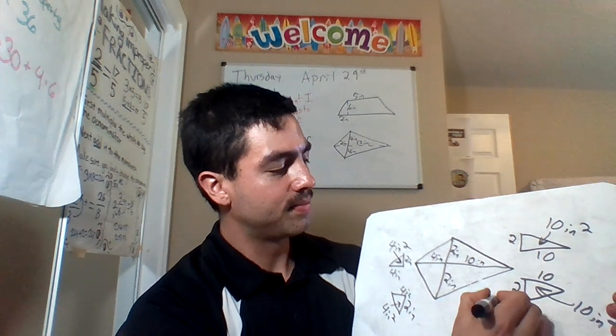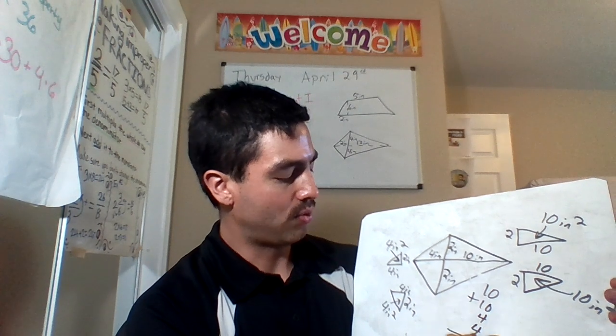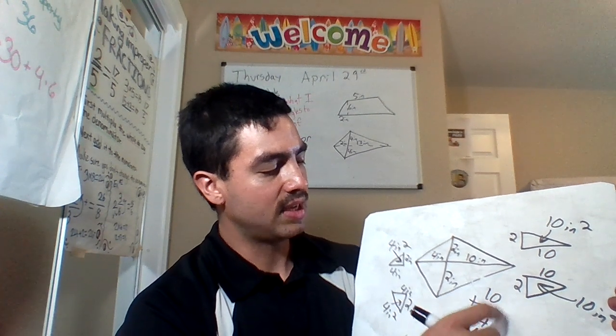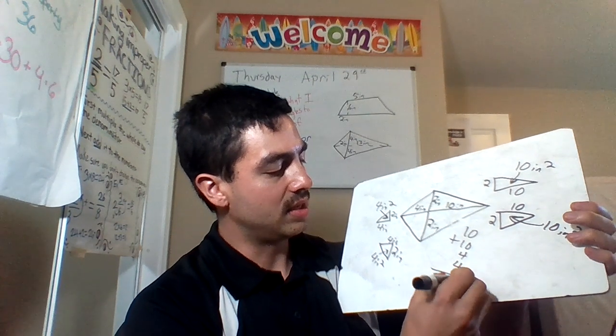Now we just add it all up. We have ten, ten, four, and four. Four plus four is eight. Plus ten is eighteen. Plus ten is twenty-eight. So our answer is twenty-eight inches squared.